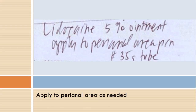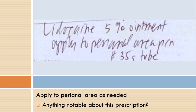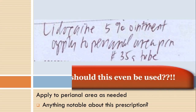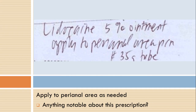Do you notice anything on here that you may want to call the doctor about? A lot of times doctors will leave something out. As the pharmacist, I would say there's something missing from this prescription — it doesn't say how often to take it. How often is 'as needed'? Maybe the patient thinks every two minutes is as needed and goes through the entire 35 gram tube in an hour. As the pharmacist, I would want it to say apply to the perianal area three times a day as needed. You can call the doctor and get those directions — and insurance will want to see them too.